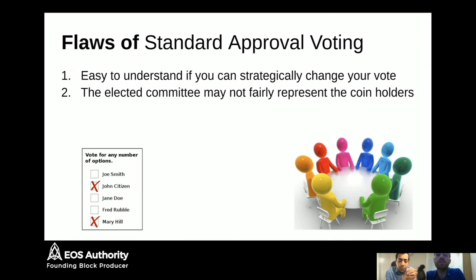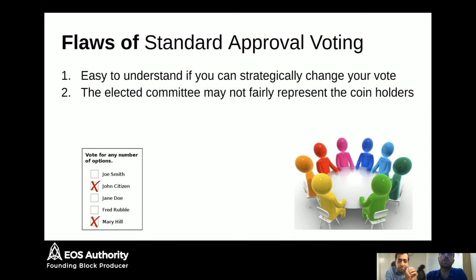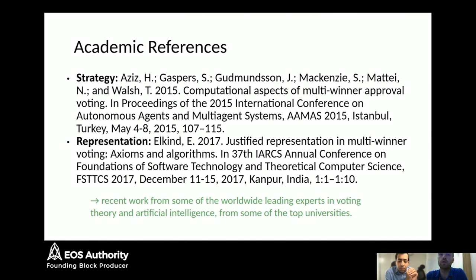Standard approval-based voting simply takes the block producer candidates with the highest tallies — in EOS, the 21 candidates with the highest number of votes. We know from academic literature that there are two flaws with this. First, because the tallying mechanism is quite simple, it's easy for any candidate to strategically manipulate the results by changing their specific vote. Second, it's about how well the elected committee actually represents the voters — the coin holders.